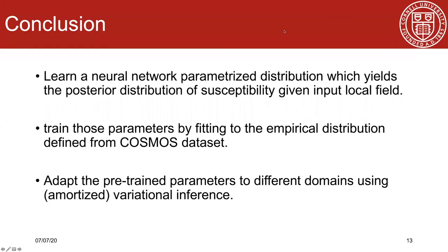To sum up, in this work, we built a neural network parameterized distribution, which models the posterior distribution of susceptibility given the input local field. The network was pre-trained on COSMOS dataset by fitting to the empirical distribution, and then adapted to different domains using amortized variational inference. Our method achieves adaptive reconstructions of susceptibility with uncertainty estimation.